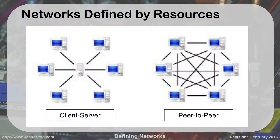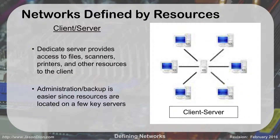The next way we define networks is by resources. In a client-server model, a dedicated server provides access to files, scanners, printers, and other resources for clients to use. All the clients reach back to the file server to get their information. The advantage is it makes administration and backup easy — if you want to back up all files, you only go to one place, the server, rather than visiting every client machine. This centralizes administration and backup, and it's the way most businesses operate.